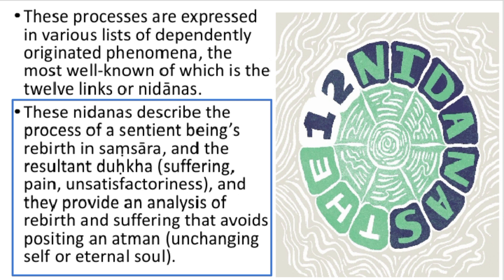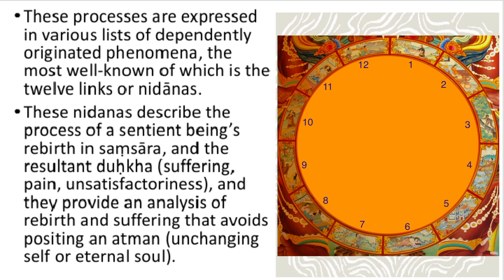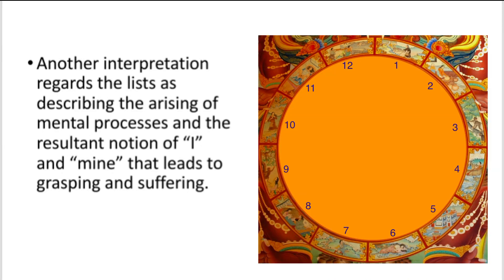The 12 links also provide an analysis of rebirth and suffering, and also reject the concept of atman as an unchanging soul. These 12 nidanas also describe how to end the process of samsara in order to avoid suffering.